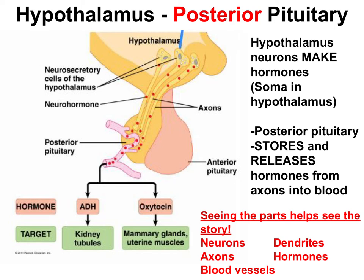The posterior pituitary gland is a little more simple to follow, so we'll start with that. There are neurons that extend from the hypothalamus into the posterior pituitary gland. The hormones are shown as red dots all throughout these neuroendocrine cells. The hormones are actually made in the cell bodies, or soma, of the neurons in the hypothalamus. Then the hormones travel down the axons of these neurons and are stored in the axon terminals located in the posterior pituitary. When it's time to release the hormones, the axon terminals release the hormones into the blood vessels in the posterior pituitary. Hormones that follow this template are ADH, antidiuretic hormone, and oxytocin.